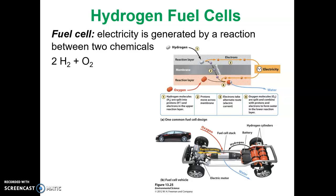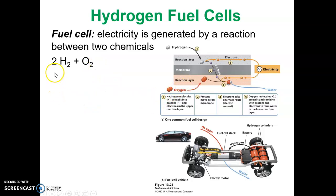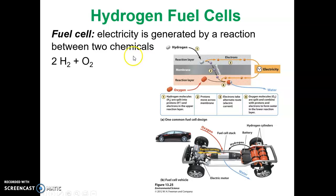Looking at the formula on the left: two hydrogen molecules, each consisting of two hydrogen atoms, plus one oxygen molecule with two oxygen atoms — like we breathe. Two H2s will combine with the two oxygen atoms to produce two molecules of water. So 2H2 + O2 gives us 2H2O. The result is water.